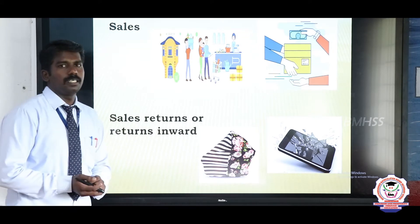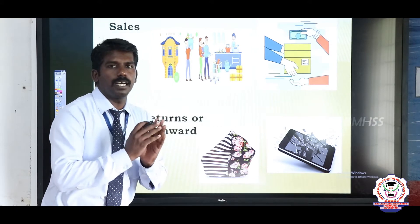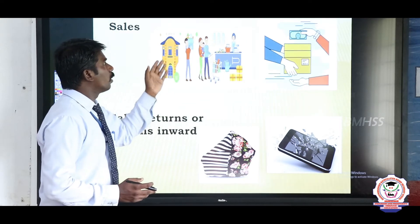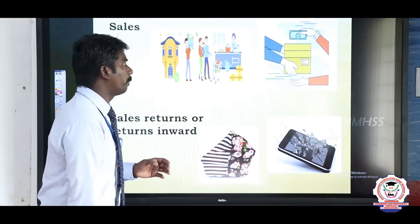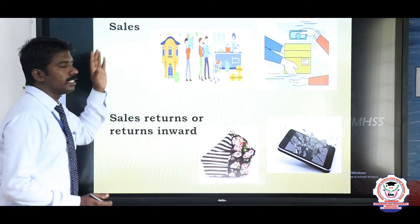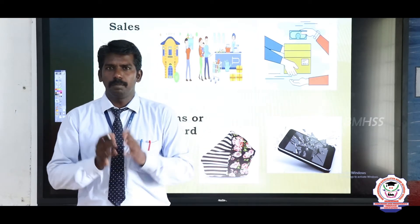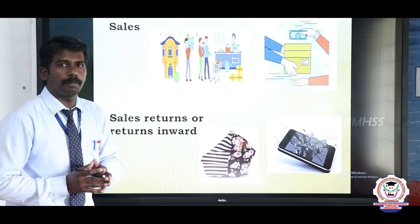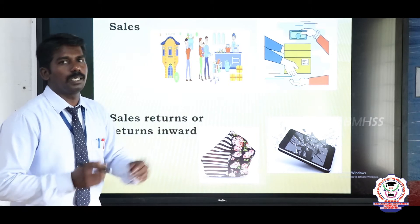Next, sales. Sales means the company purchases raw material, converts it into finished goods, and finally sells the goods to consumers. The consumer buys the products from the company and pays the cash. Sales is nothing but selling goods to the buyer and receiving cash from the buyer. Sales is the major income for each and every company because the major income is gained through the sale of products and services.